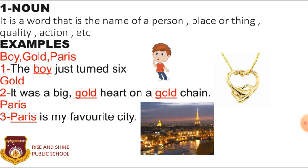Dear students, keep it in mind: what we see, feel and touch are nouns — like book, water, chair. And what we think of in our mind as objects of thought are also nouns. For example: goodness, beauty, ugliness, wisdom.